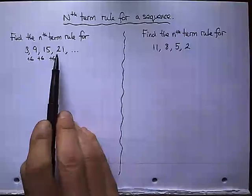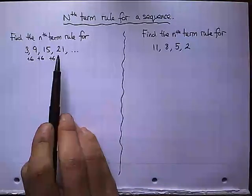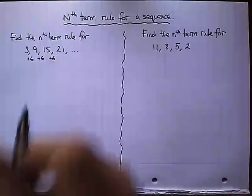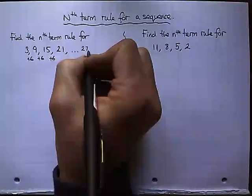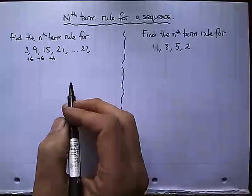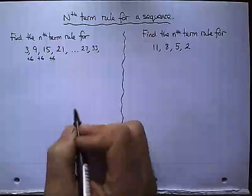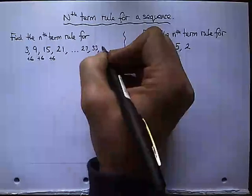So to get the next term, I would just need to add 6. So add 6 to 21 and we get 27. Add 6 to 27, we get 33. Add 6 to 33, we get 39.